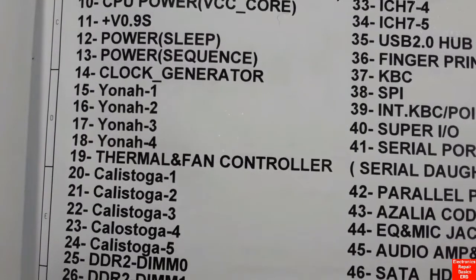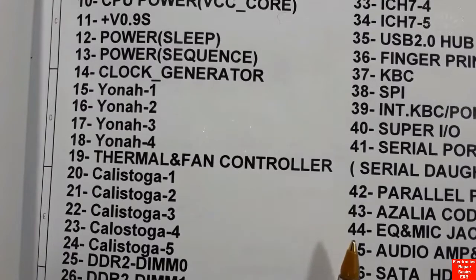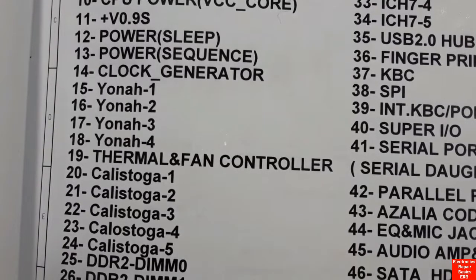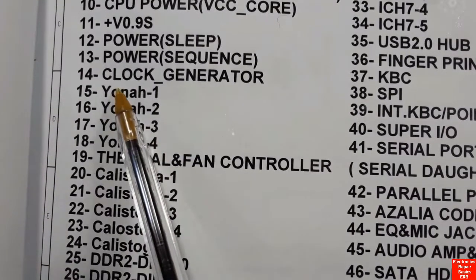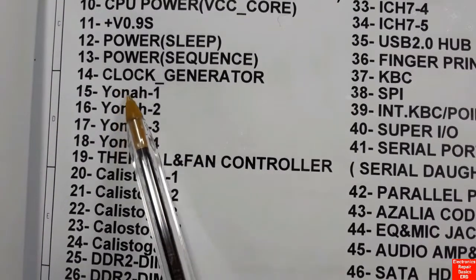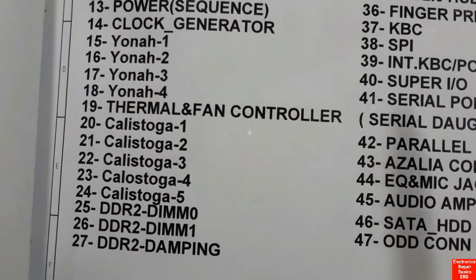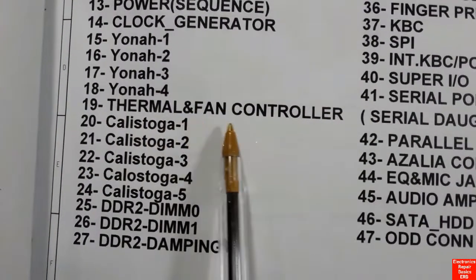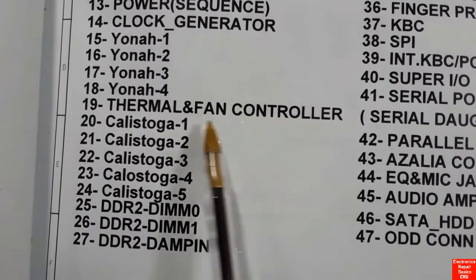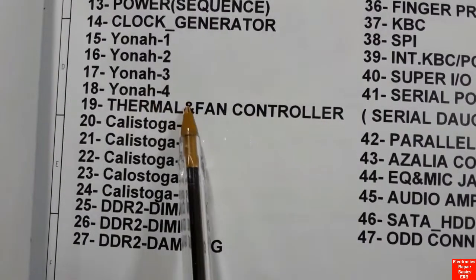From page fifteen to page eighteen we have the CPU or processor. You will find the circuit diagram for this kind of CPU across pages fifteen, sixteen, seventeen, and eighteen.